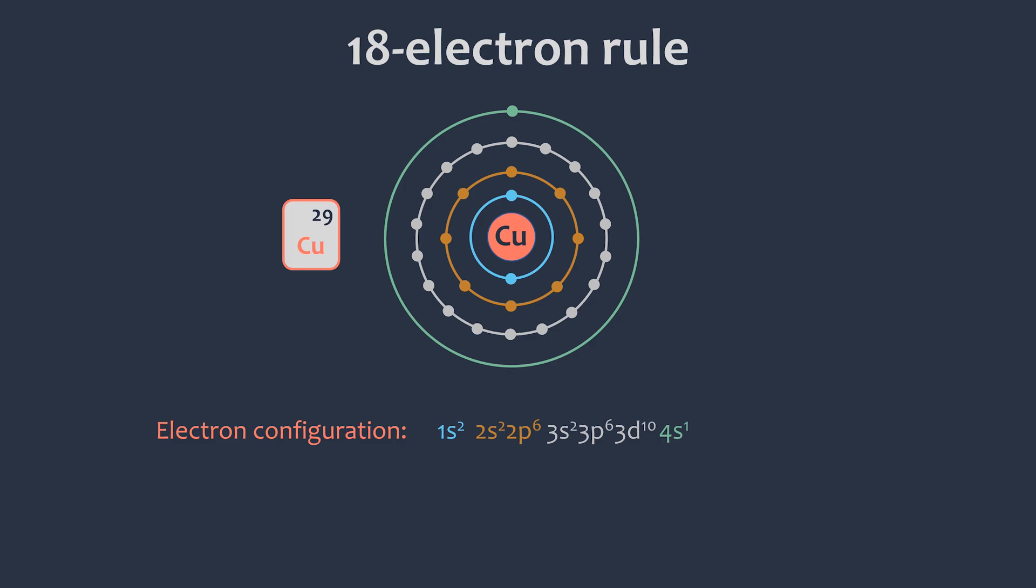The easiest way for copper to have a stable noble gas configuration is to lose one electron. This would yield the configuration of 18 electrons. And now, let's do some examples of counting electrons in transition metal complexes.